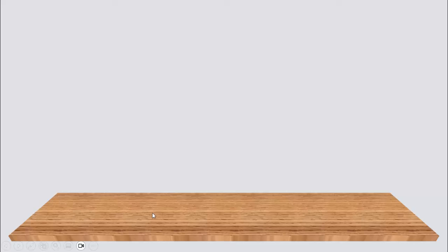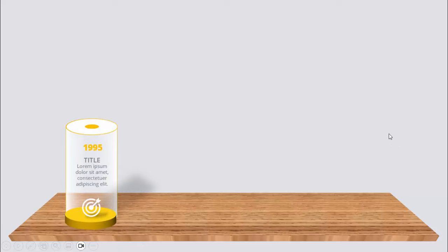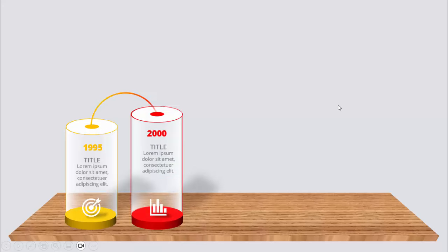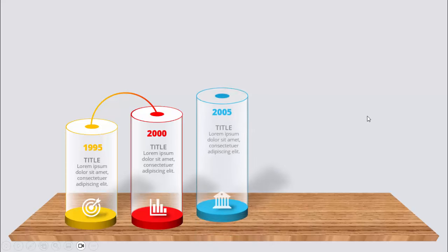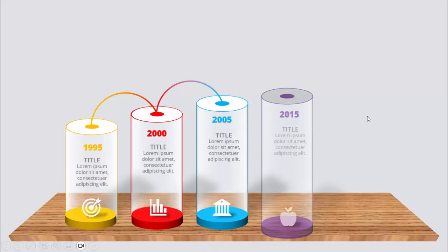In today's tutorial, I'm going to show you how to create a manual bar chart slide design in PowerPoint. This is how the slide works — I've created a kind of platform where the bars come and display information. When I click, the first bar comes showing a timeline with the year 1995, the title, detail text, icon, and shadow effect. Then clicking again shows the next year, progressing from 1995 to 2000.